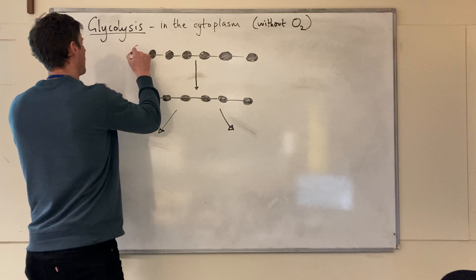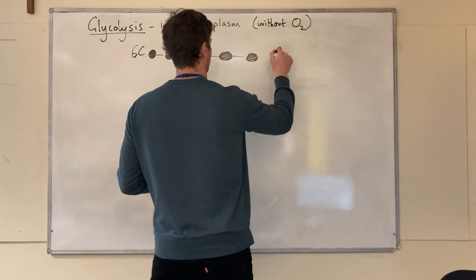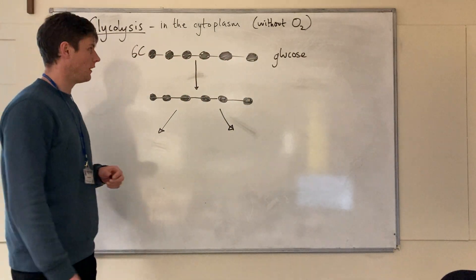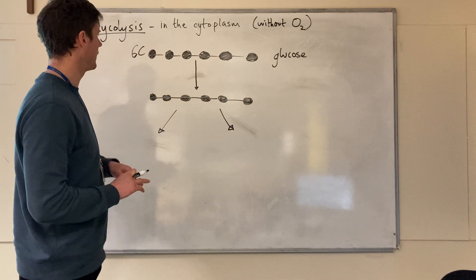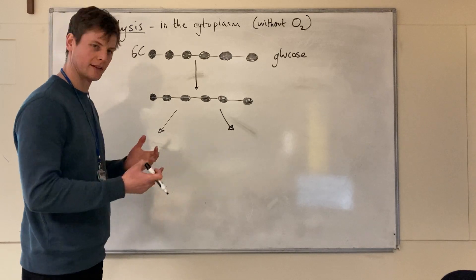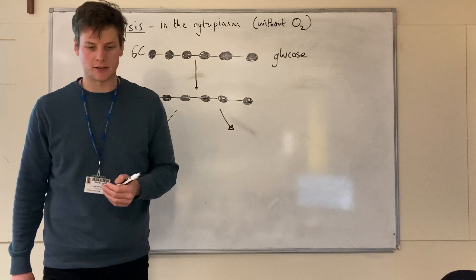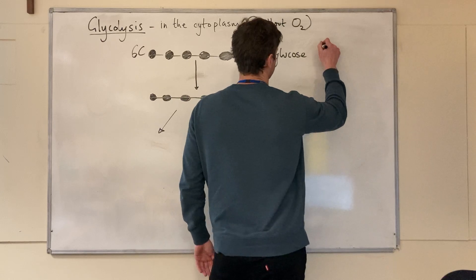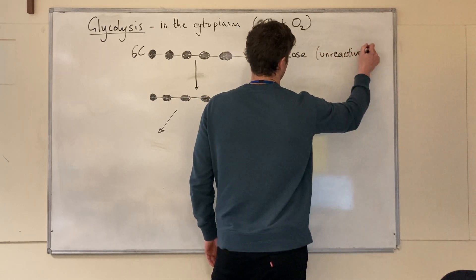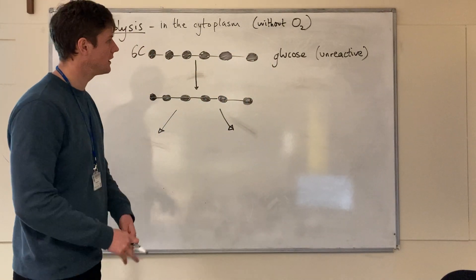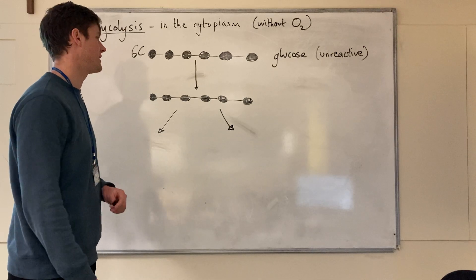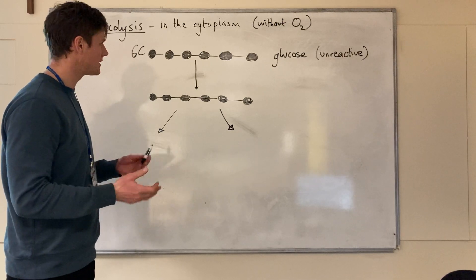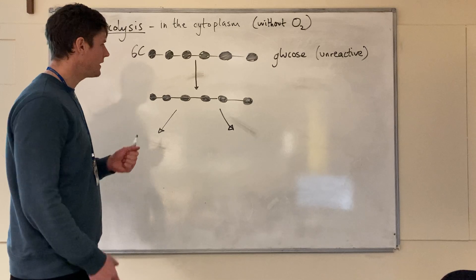We begin with a six-carbon glucose molecule. I've drawn glucose as a chain here, unlike how we usually show it in its ring structure. I've only shown the carbons here because it's just those carbons that we are concerned about. Now glucose is very unreactive, and that's important because it needs to be transported in the blood and around the cell.